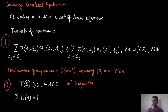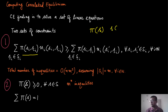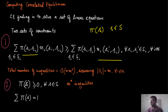In this context, our variables will be pi of s, where s belongs to capital S, that is the strategy profile of all the players. We have two sets of constraints. The first is essentially from the definition of correlated equilibrium — just writing the constraint of correlated equilibrium.